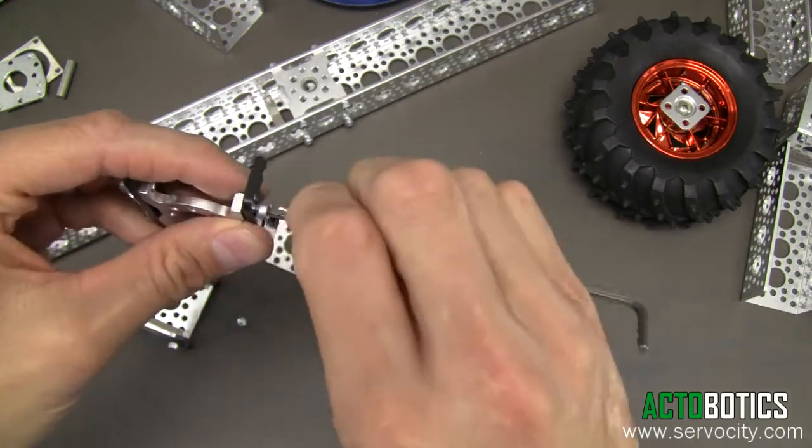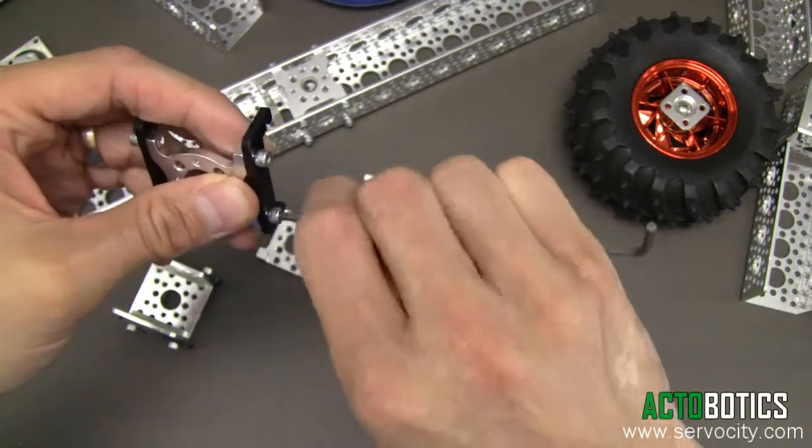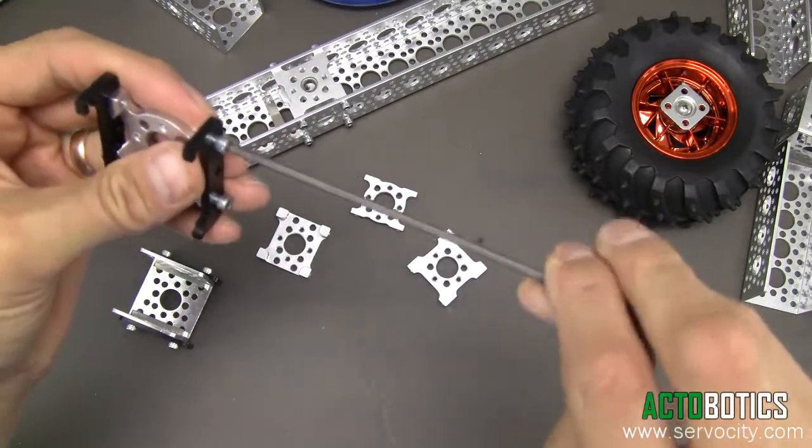We've got some 6-32 by quarter-inch socket head cap screws here. Very easy to put together and really versatile. Just tighten them down.